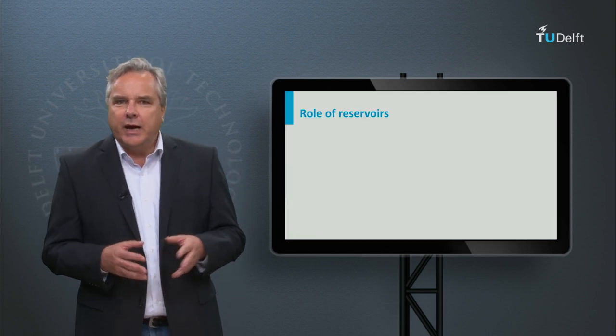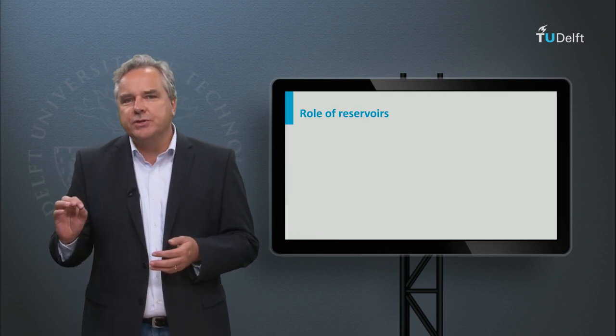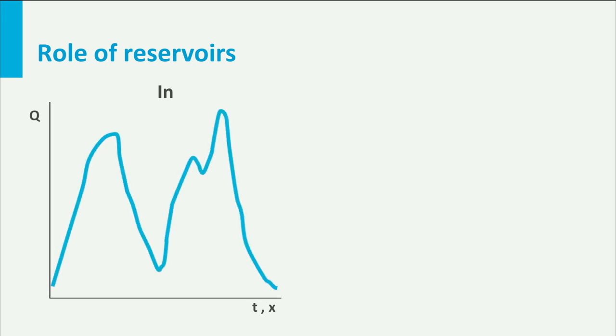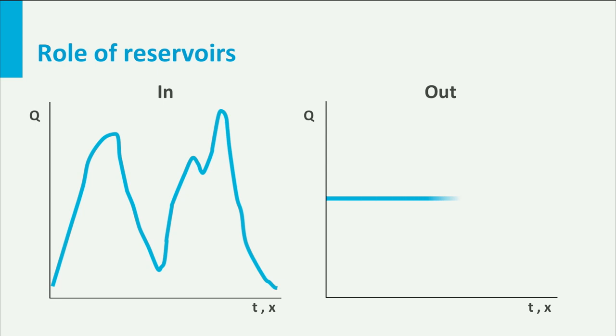In an ideal world our water supply would exactly match our water demands — never too much water, never too little. In reality, water supply is extremely variable. To ensure a steady supply of water we have built reservoirs as buffers against natural variation. Let's say that we need a steady supply of drinking water for a large city, but the discharge of the river supplying the water varies strongly over time. By building a reservoir we can filter out these variations and ensure a steady supply.